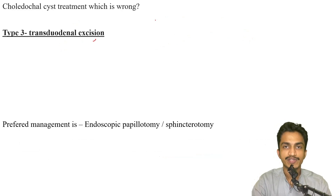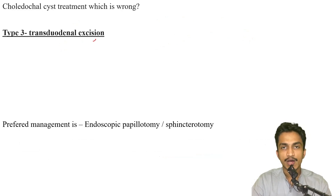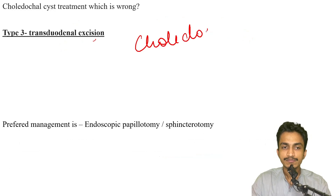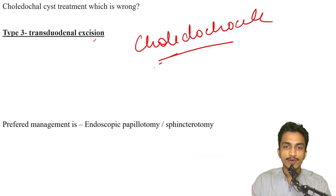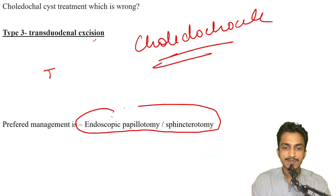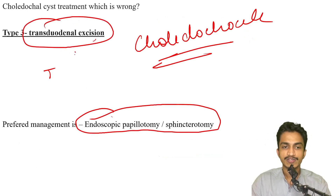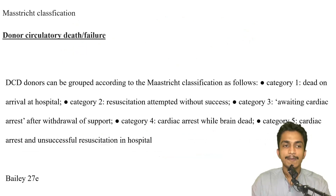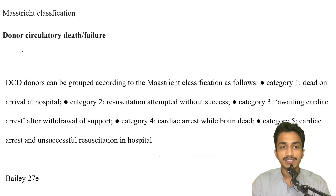Choledochal cyst treatment: for Type 1 and Type 2 we go for excision with Roux-en-Y; for Type 4 and 5, excision with or without hepatectomy and hepaticojejunostomy. For Type 3 — choledochocele — we go for endoscopic papillotomy or sphincterotomy. We do not go for transduodenal excision, so that is incorrect. If asked for Type 3 choledochal cyst, the answer is endoscopic sphincterotomy.